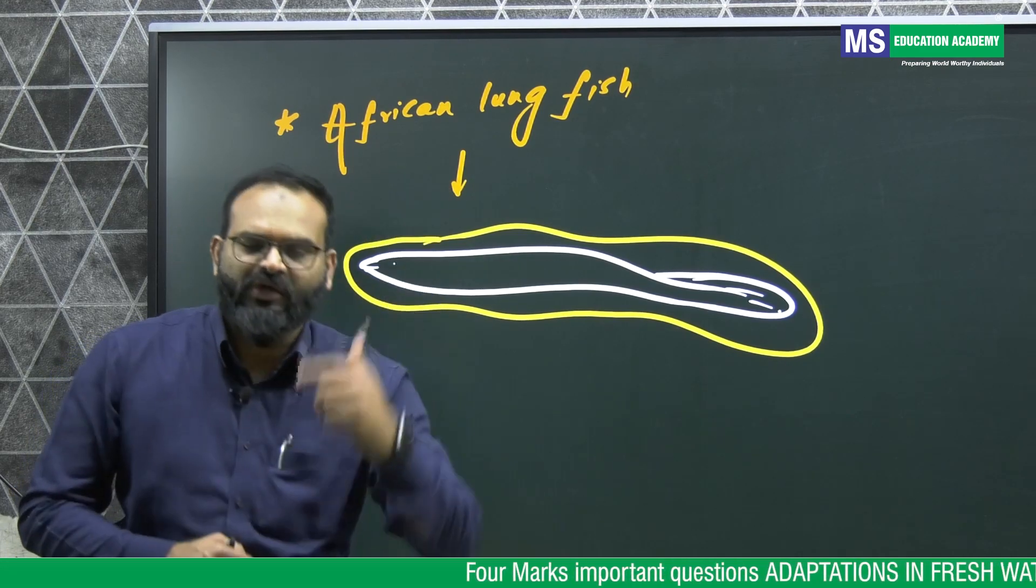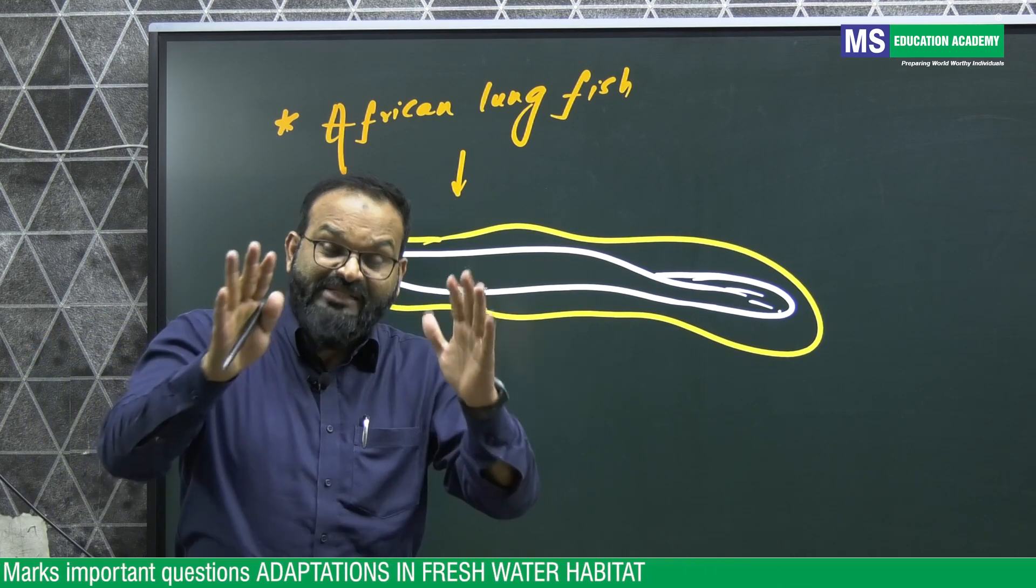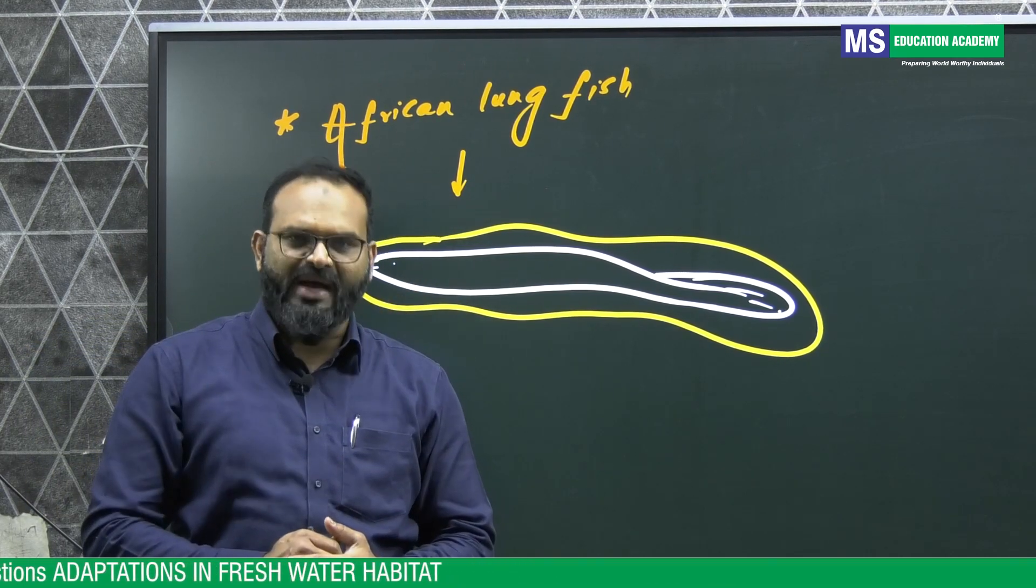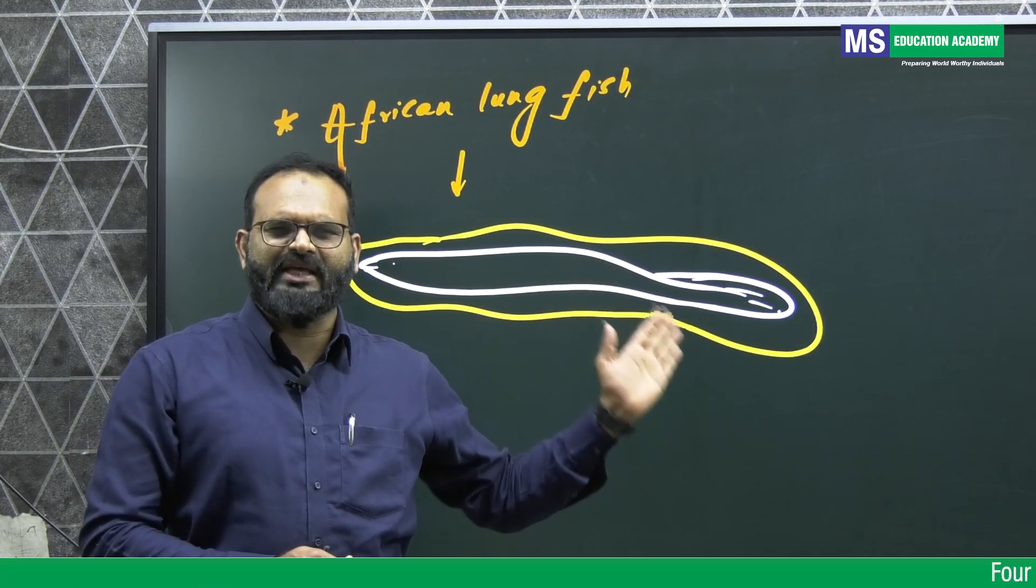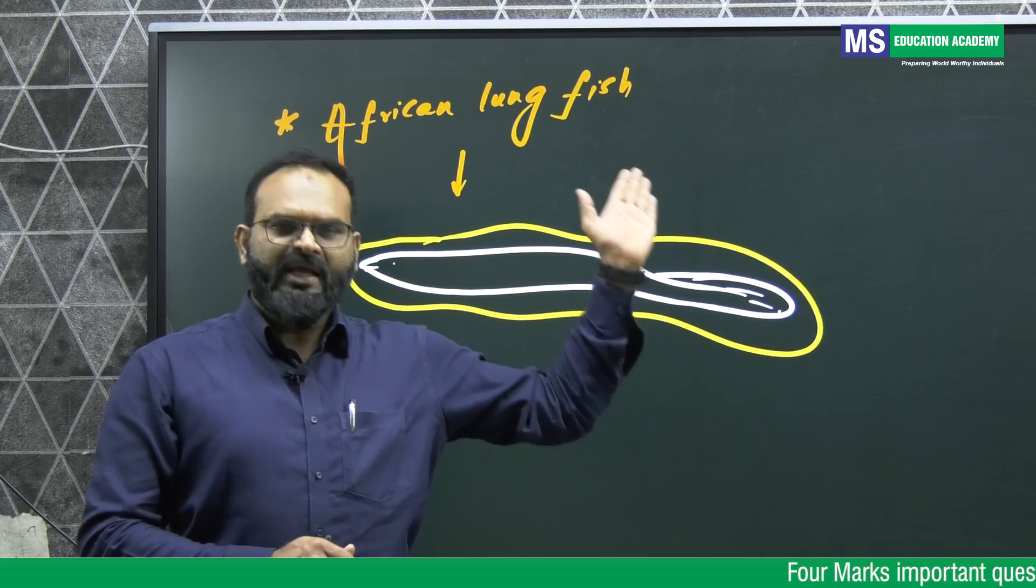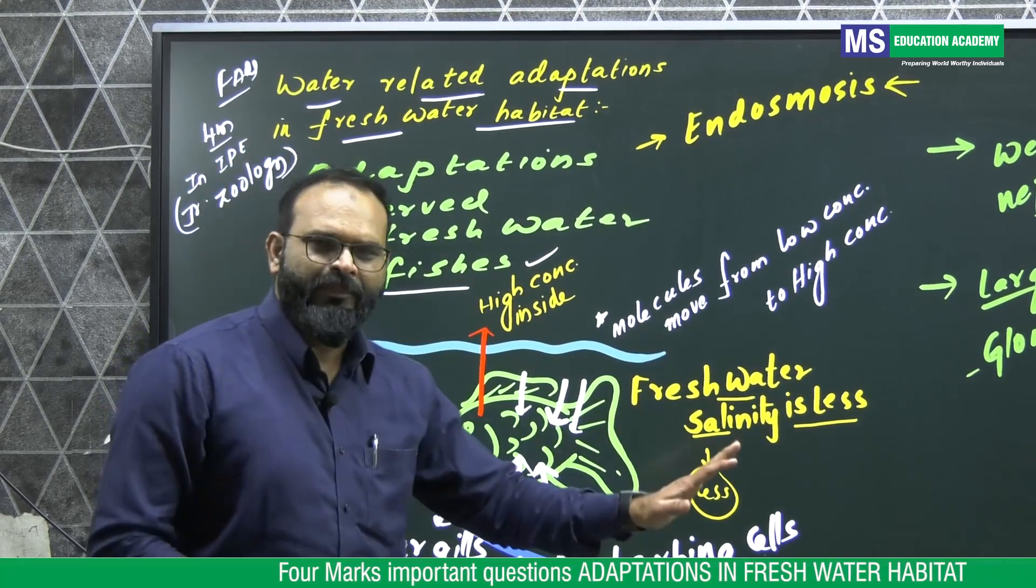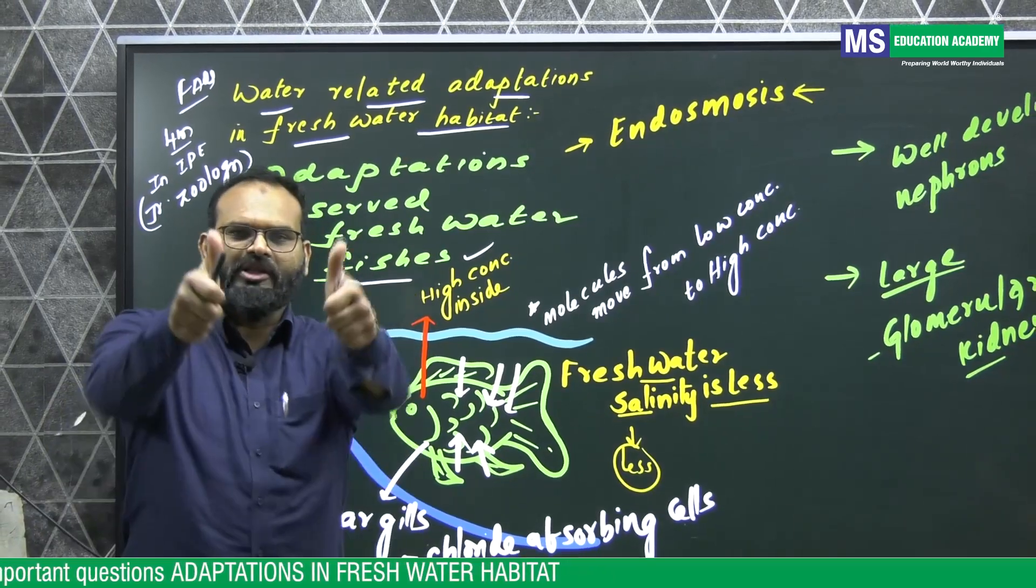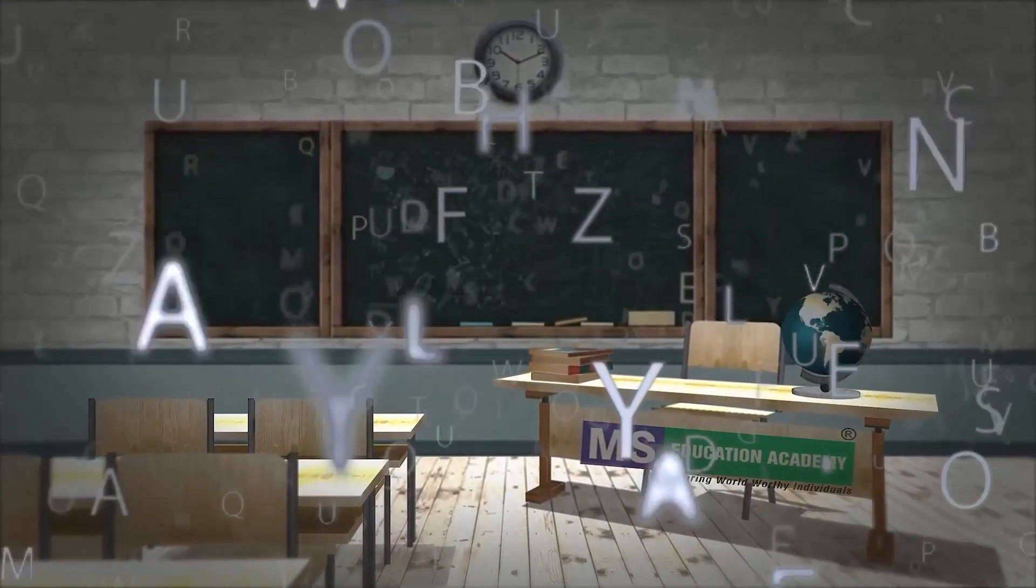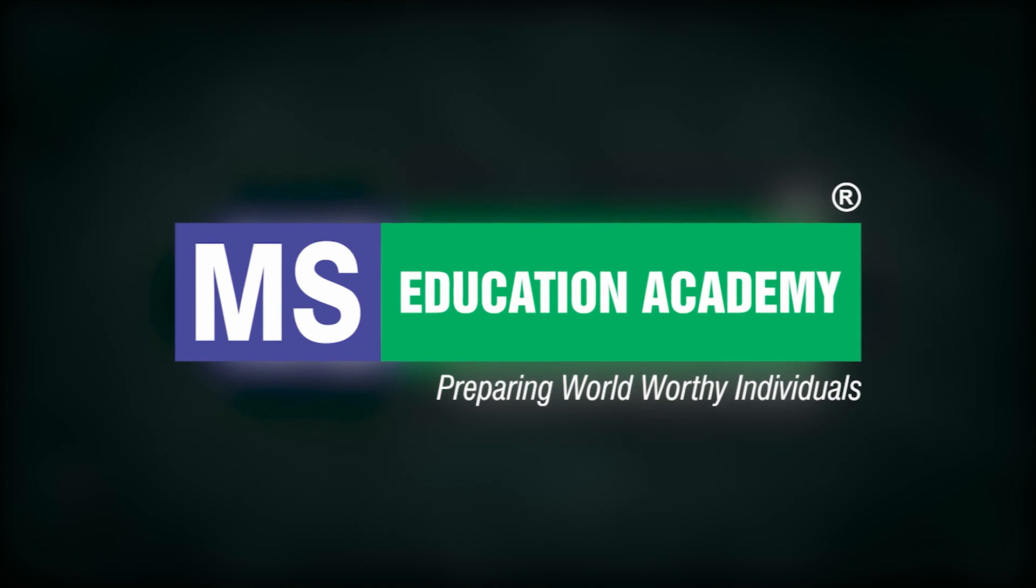That's about adaptations observed in freshwater animals to overcome water problems, to overcome osmoregulatory problems. This may be asked as a four marks question and this is a frequently asked question. Simple diagrams and simple content and you can score 100% marks. All the best. MS Education Academy, preparing world worthy individuals.